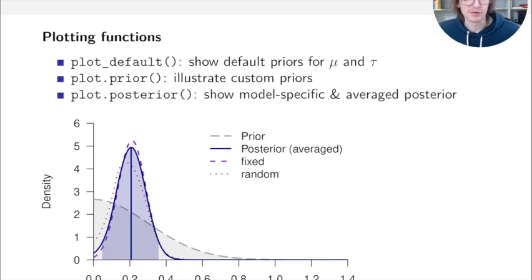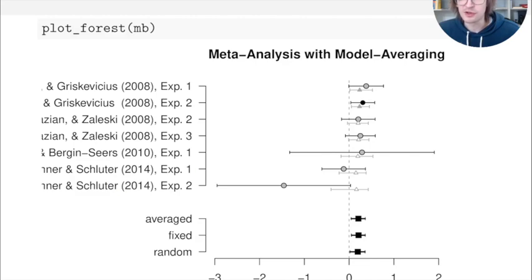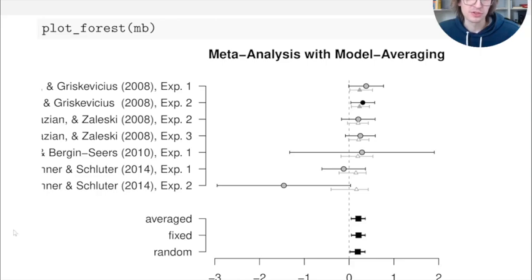The plotting functions are very helpful. You get a posterior for the fixed effects model (violet), a posterior for the random effects model (dotted red), and a model-averaged posterior (blue) — a combination of the two, weighted by their posterior probabilities. A forest plot shows descriptive effects as circles and shrinkage estimates for studies as triangles, illustrating that the model estimates effects are rather similar even though descriptive effects vary more. The bottom shows three estimates: fixed, random, and the averaged combination.